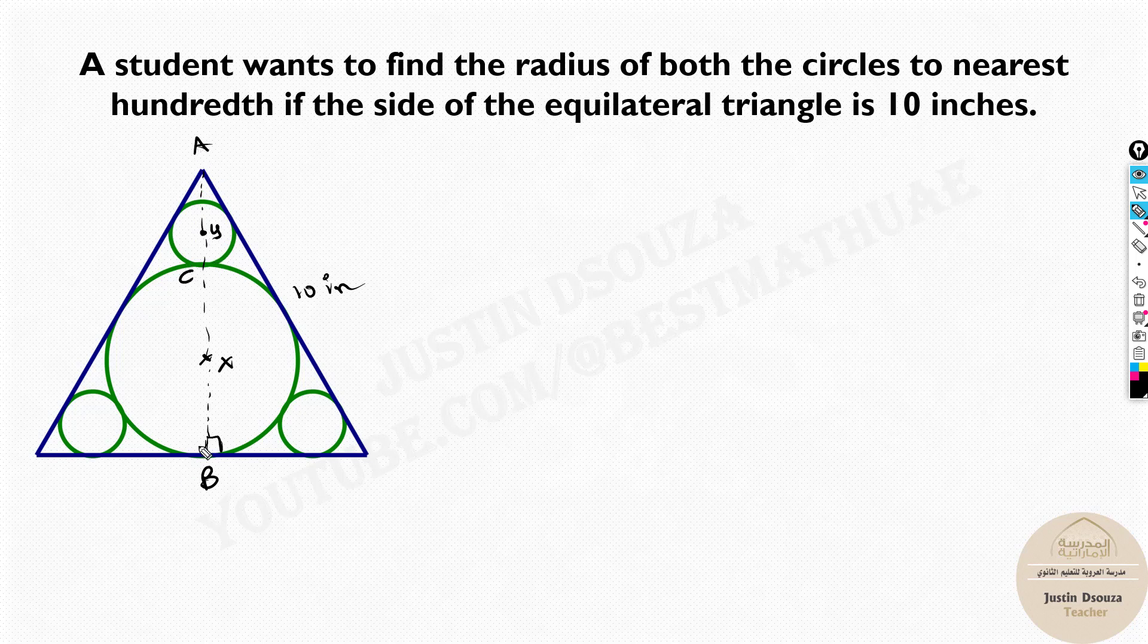So I've got AB, the entire length, that's the height or altitude of the equilateral triangle. Circle X whose radius can be given as XB or XC, and circle Y whose radius is YC.